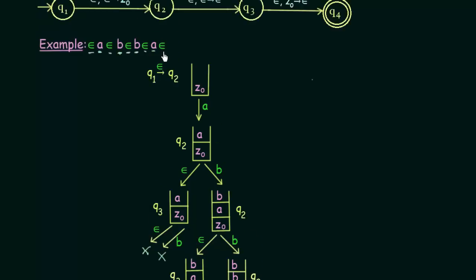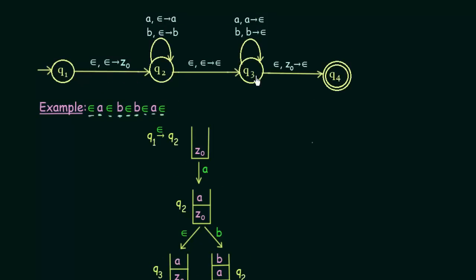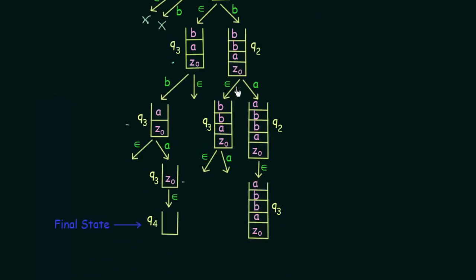We have read this A and reached the end of the string. There is an epsilon here, and we are in Q3. In Q3, if we get epsilon, we check if Z0 is on top of the stack. Z0 is indeed the only symbol remaining. So we pop Z0 and go to the final state Q4. The stack is now empty and we have reached the final state — the string ABBA is accepted!